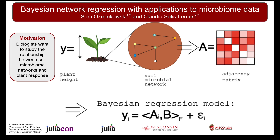I'm Sam Osmankowski and this is Bayesian network regression with applications to microbiome data. The microbiome is a popular and fast-growing area of study in plant biology. Biologists are interested in studying the relationship between the soil microbiome and a plant response. To that end, we're investigating a Bayesian regression model using soil microbiome phylogenetic networks as covariates.